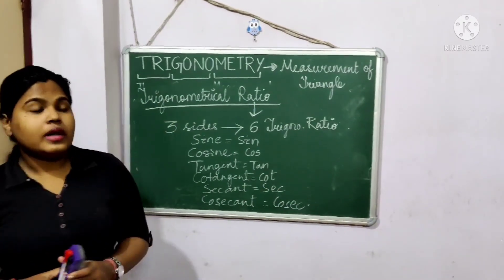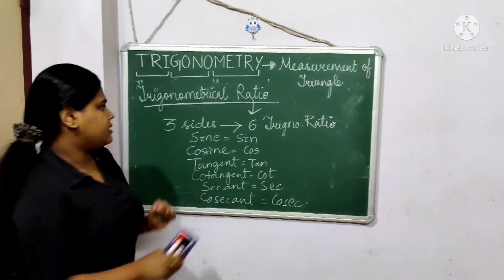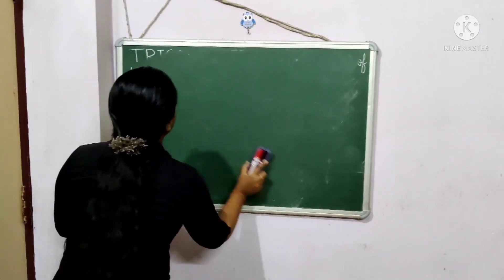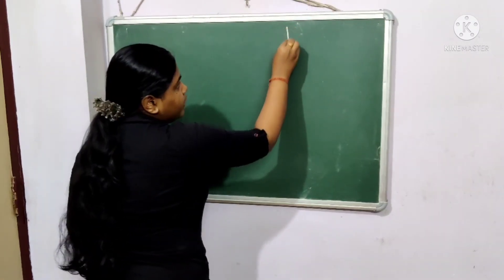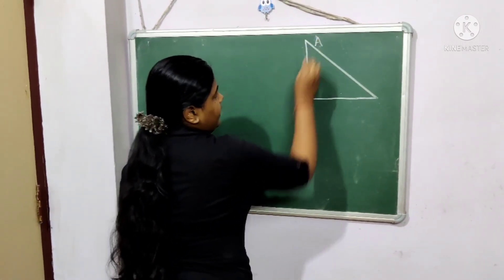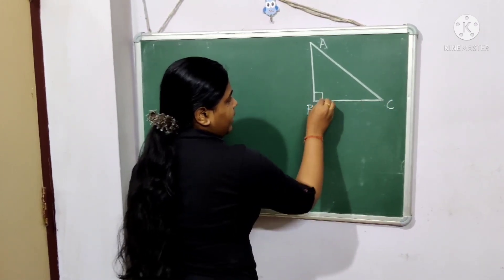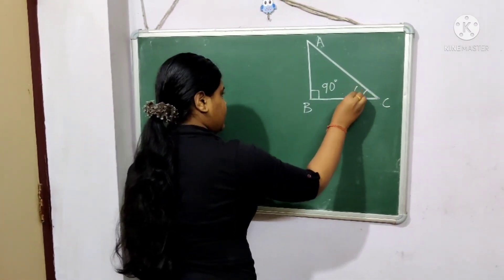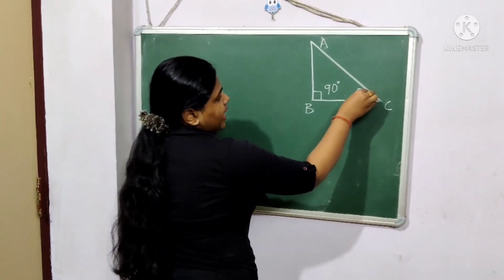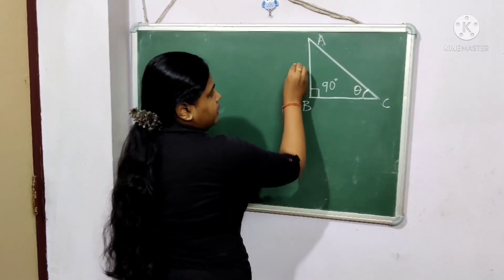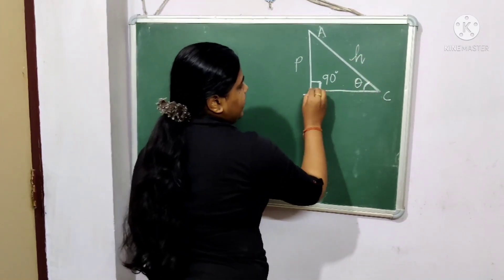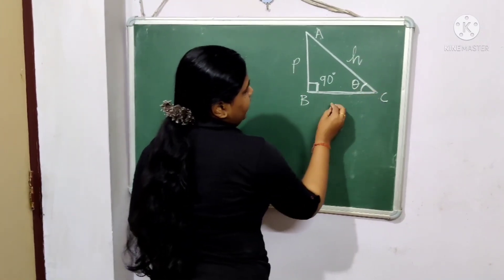So now we will learn about those trigonometrical ratios. Here I am going to draw a right angle triangle A, B, C, with B angle having 90 degrees and C angle is theta, that is the acute angle. As I said before, the side opposite to your acute angle is perpendicular, the side opposite to your right angle is hypotenuse, and the side adjacent to the acute angle is base.